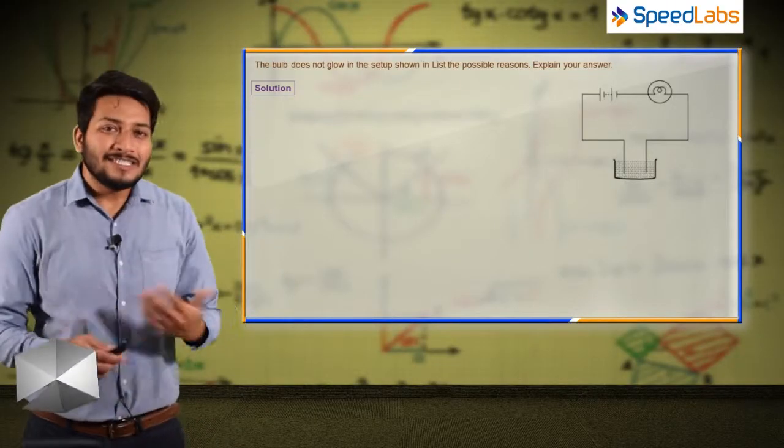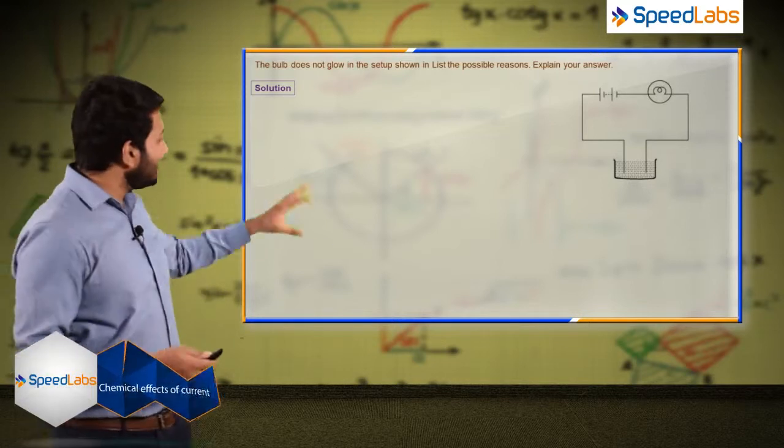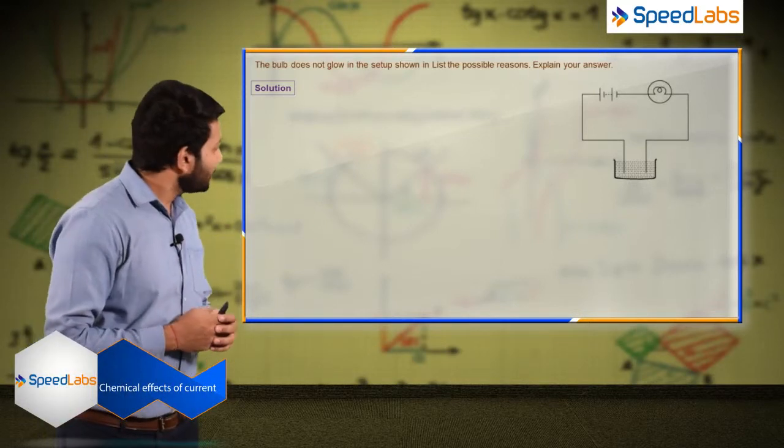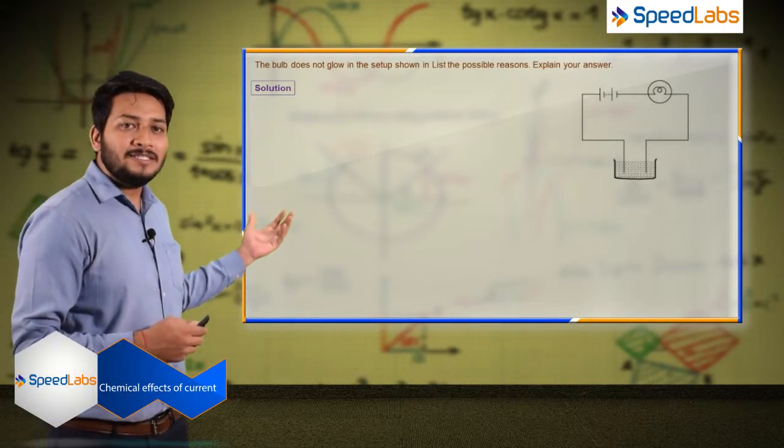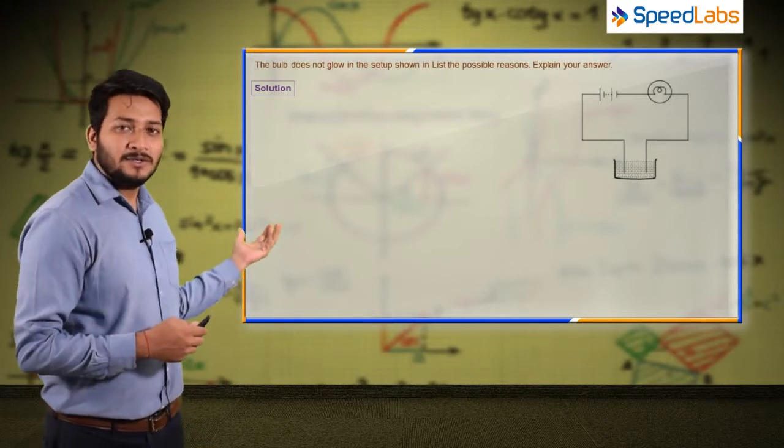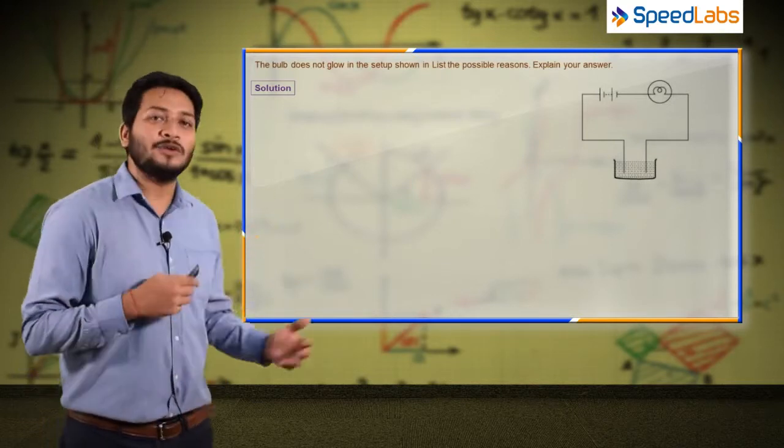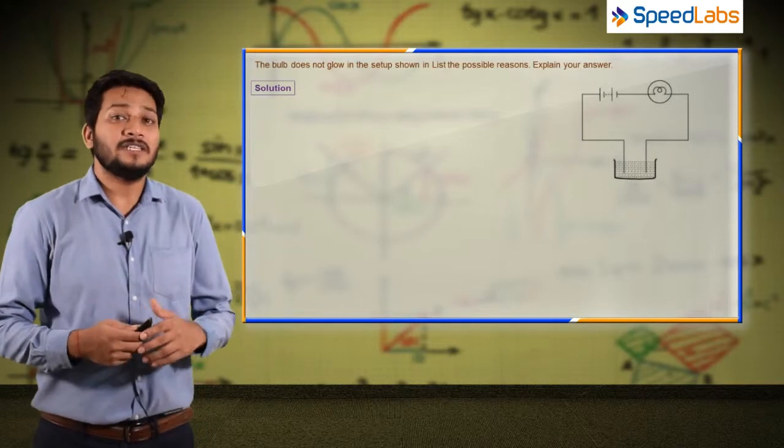Now again, a very logical and interesting problem. In the given circuit, the bulb is not glowing. You have to identify the possible reasons why the bulb is not lighting up.